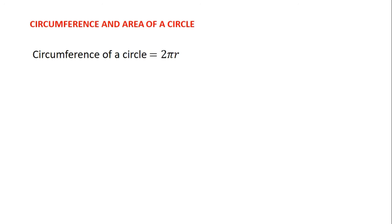The formula for finding the circumference of a circle is 2πr, where r is the radius of the circle. This is when you have been given the radius. If you have the diameter of the circle, then the formula is πd, because 2r is the diameter, so 2πr is the same as πd.